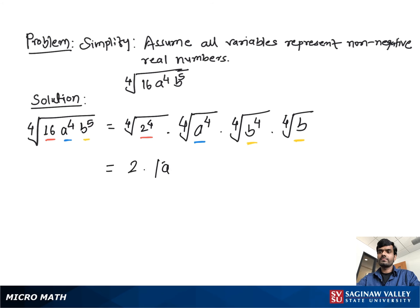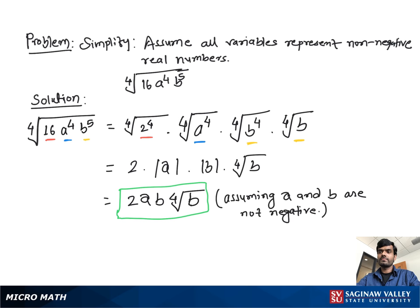We take the absolute value because a and b may be negative. We can write the final answer as 2ab times the fourth root of b, assuming a and b are not negative.